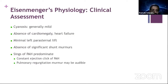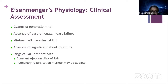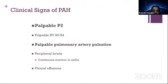Typical presentation features in Eisenmenger syndrome: cyanosis is generally mild. No cardiomegaly, except in ASD Eisenmenger. Minimal or no parasternal lift. Absence of significant shunt murmur — no S3, no flow murmur across the defect. Constant ejection click of pulmonary hypertension and pulmonary regurgitation murmur may be audible. In a nutshell, except for a palpable and loud P2, the murmur is generally very mild — a 2/6 murmur, palpable RV S3/S4, and palpable pulmonary artery pulsations, which are often missed on examination.